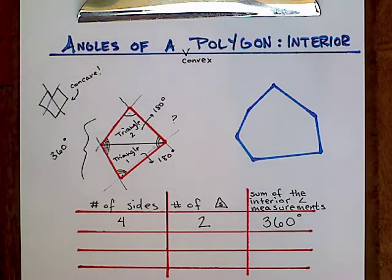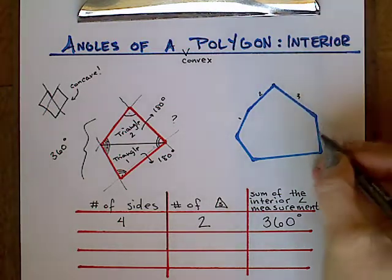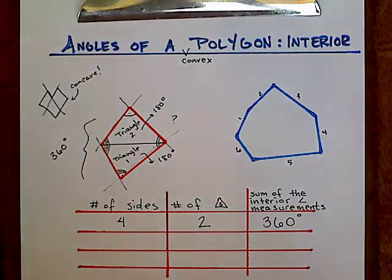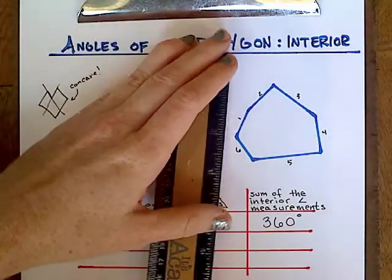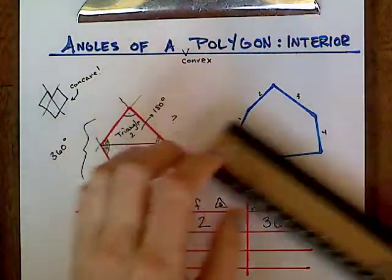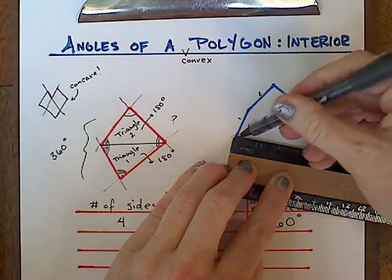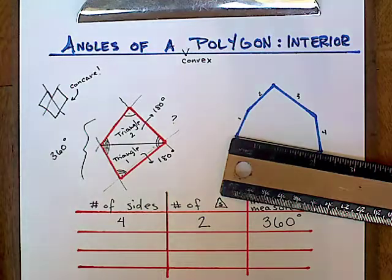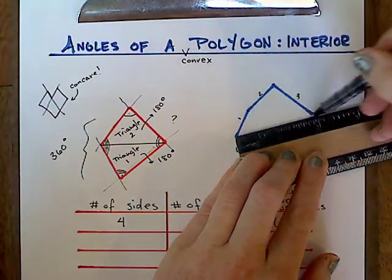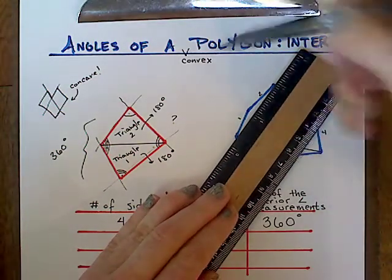Now let's take a look at this more complex polygon, which is also convex and has six sides. Let's randomly pick a vertex — I'm going to pick this one — and cut this polygon into triangles. I'm going to keep the same vertex throughout, because I want all of the angles of my triangles to line up with the interior angles of the polygon. That way, I can just keep adding 180 to get the sum of the interior angles.